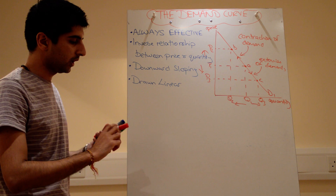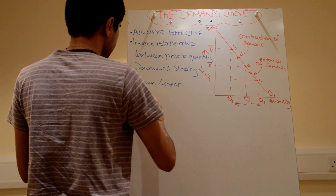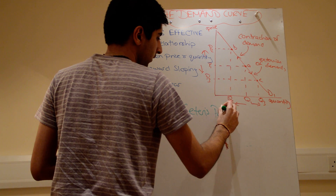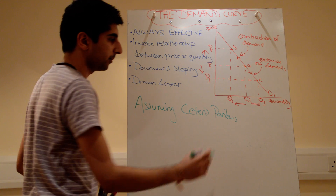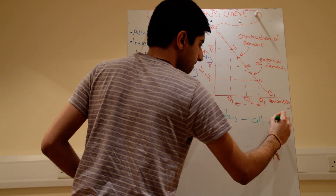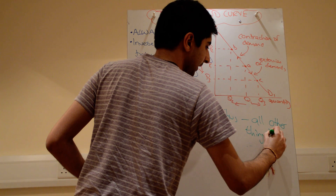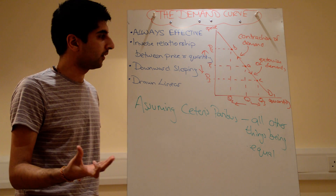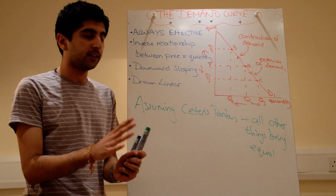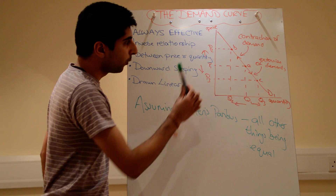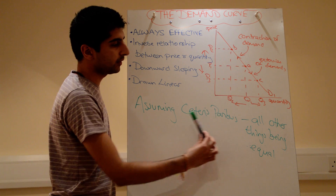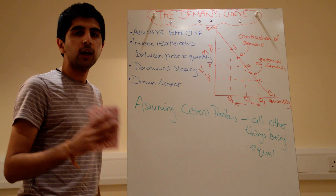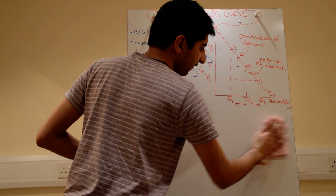Any time the price changes, we move along the curve. But that assumes Ceteris Paribus — a Latin term and a key term in economics — which means all other things being equal. This fundamental assumption isolates the law of demand. If we assume everything else to be equal and only price changes, we can isolate this law. In reality, though, lots of other factors can affect demand, so this assumption doesn't always hold.